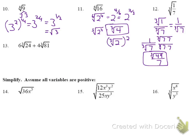Number 14: we have the square root of 36x to the 5th. For a square root, we need pairs of factors. 36 is 6 × 6, so a 6 comes outside. For x to the 5th, we have 2 pairs of x's, so x squared comes out, leaving just an x inside. Our answer is 6x squared times the square root of x.